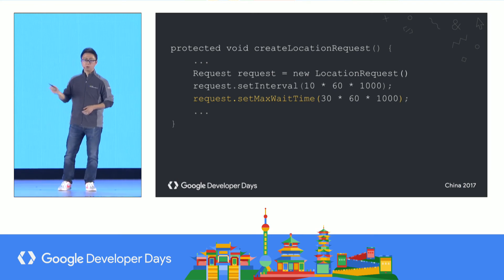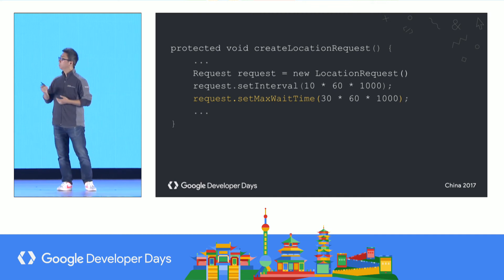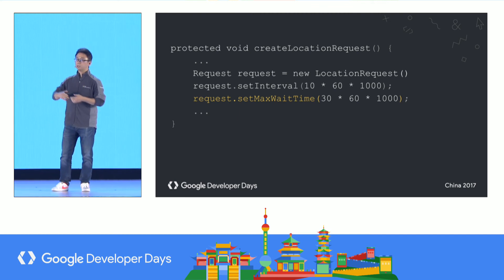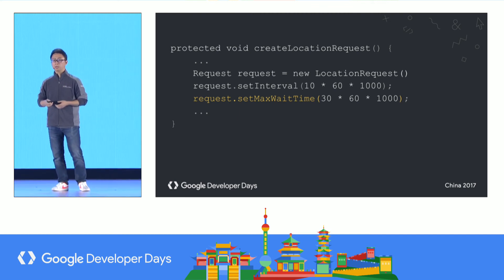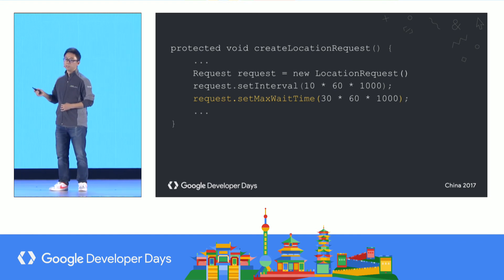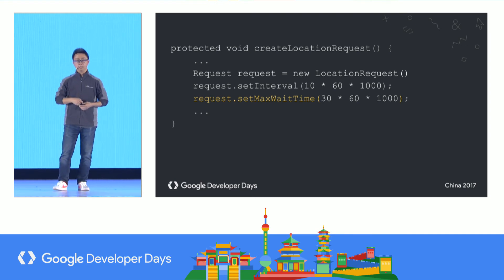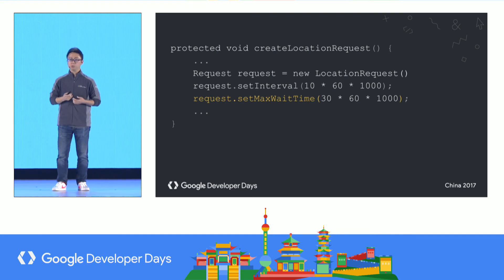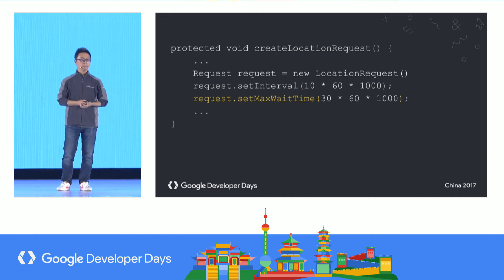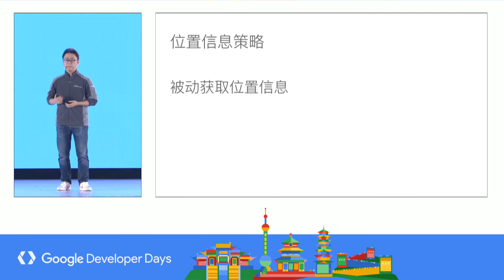Here is the code to set up batching. With just a short snippet, you can enable it. Use setInterval to set the time interval. And if you use setMaxWaitTime, there will be a longer time gap that the system can leverage. For example, every 10 minutes the system requests the location once, but every 30 minutes the system delivers three answers in a batch. So this kind of batching really helps.